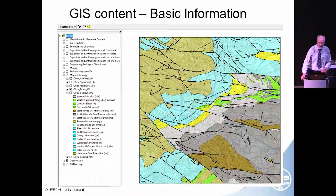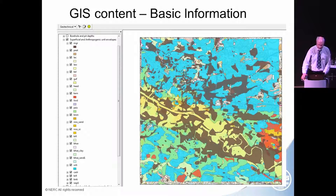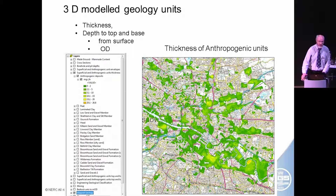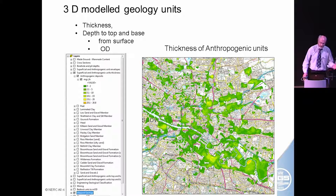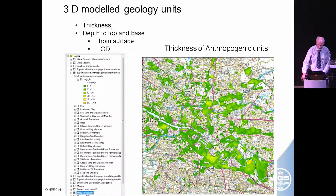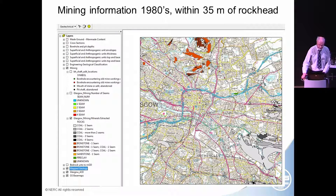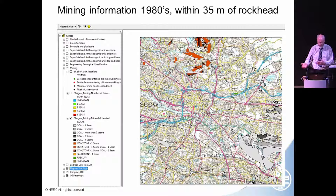The GIS contains basic information — we've seen this before — the solid geology, bedrock geology, and then we have the superficials. We also added data as grids from the 3D geological model. So we have, as we have elsewhere in Rotterdam and other places, thickness, depth to top, depth to base from surface or OD. Because they're grids, you can interrogate each part of the map to find out the thickness and depth of all the different units if they're switched on. This is the anthropogenic unit thickness map. We can also put in hazard information — you could put landslides in if you're in that sort of area, or shrink-swell problems.